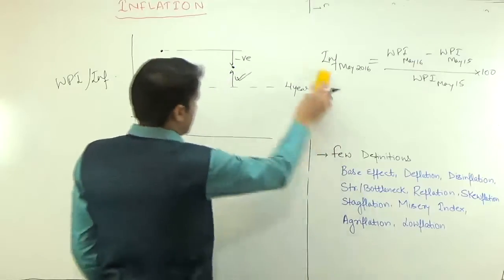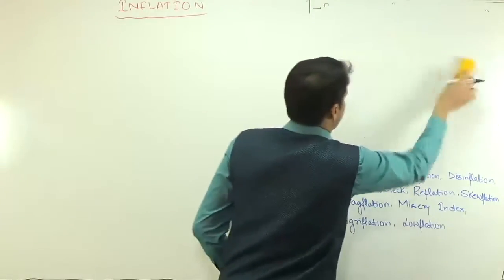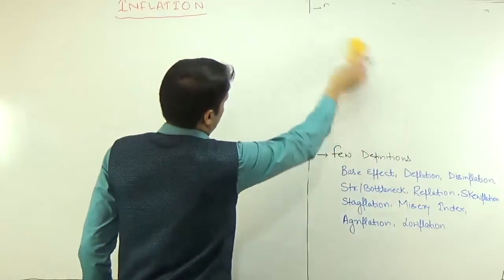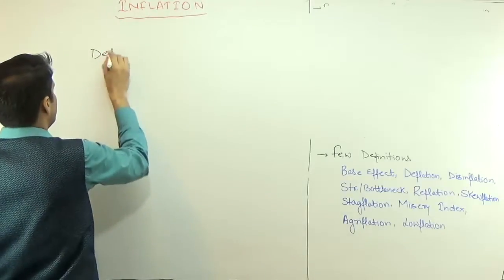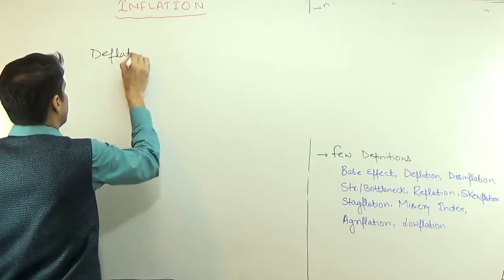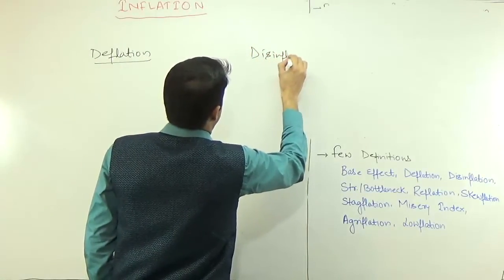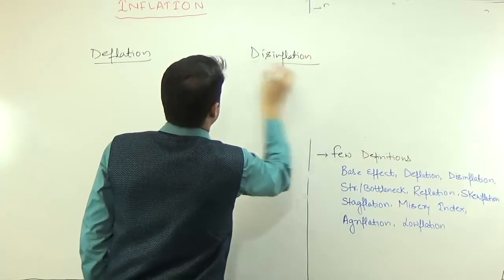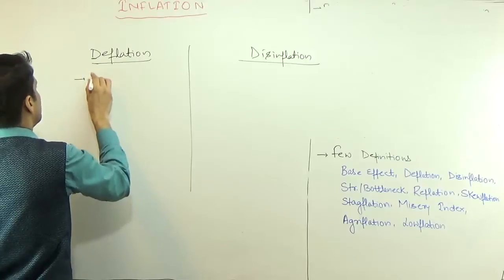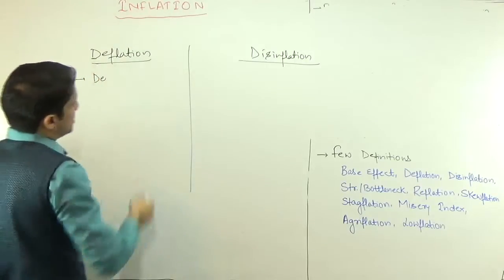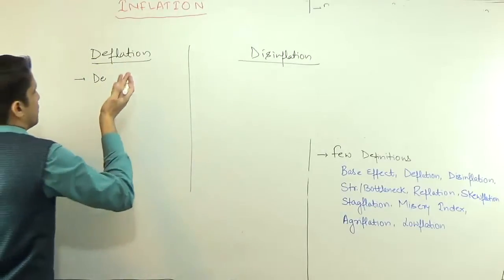Then we have the next term: deflation and disinflation. In a few books it is written that deflation and disinflation are the same thing, but they are totally different. Deflation is just the opposite of inflation. In inflation, there is a persistent increase in the prices of commodities; deflation is a persistent decrease in the prices of goods and services.